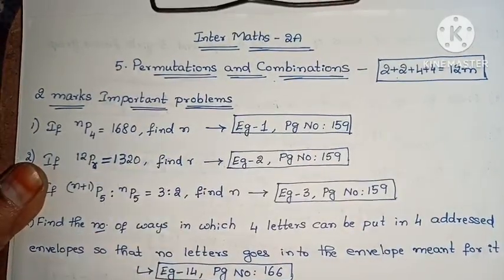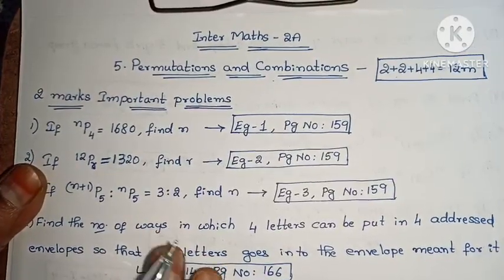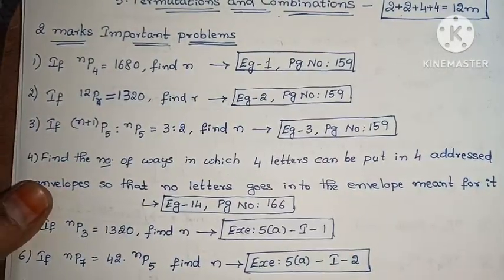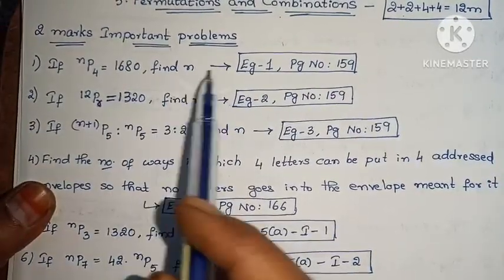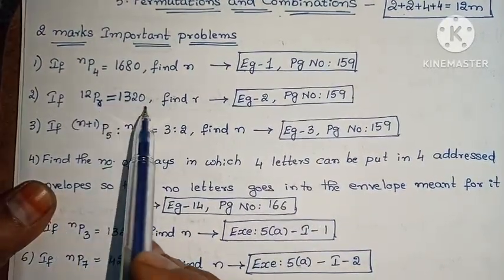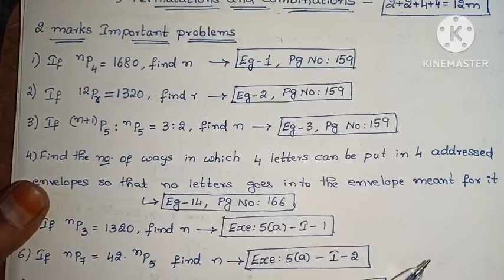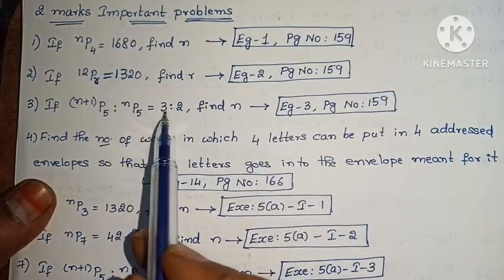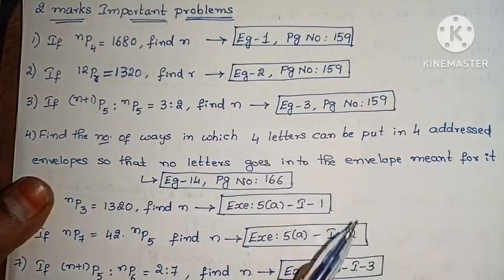My first section covers the 2-mark important questions in this chapter. I have already explained the questions and solutions — please open the link in the description below. First: if NP4 equals 1680, find N (Example 1, page 159). Next: if 12PR equals 1320, find R (Example 2, page 159). Next: if NP5 is to NP6 equals 3 is to 2 — wait, find N (Example 3, page 159).